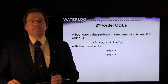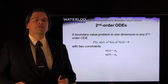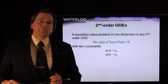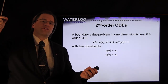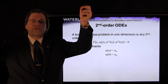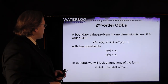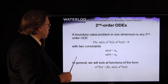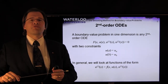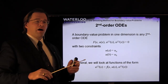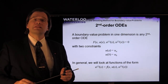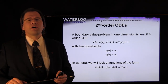Any second-order boundary value problem begins with a second-order ODE in general form, with two constraints: we fix the value of the solution at the left-hand endpoint and another fixed value at the right endpoint. We will focus on those second-order ODEs where we can write the second derivative as a function of x, u(x), and its derivative. The implicit function theorem says this is generally possible, so this is not a significant constraint.